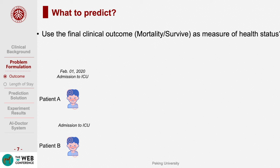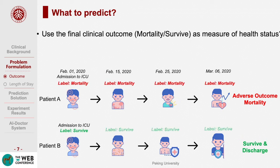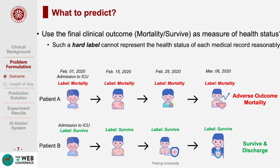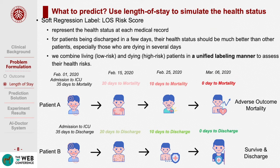Next, we need to formulate the prediction task. The straightforward label is using the final clinical outcome as a measure of health status at each record. Suppose patient A and patient B are admitted to the hospital on February 1st with similar health status. Patient A unfortunately died at March 6th, while patient B survived and was discharged the same day. Such a hard label cannot represent the health status of each record reasonably. For patients being discharged in a few days, their health status should be much better than other patients, especially those who will die in several days. As a result, we decided to take the remaining time spent in ICU as a health risk score, combining survived and mortality patients in a unified manner to assess their health risks.